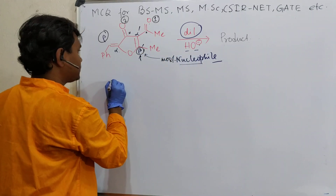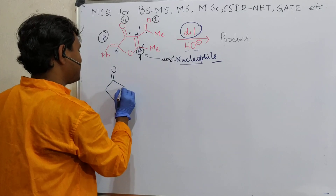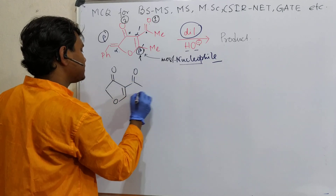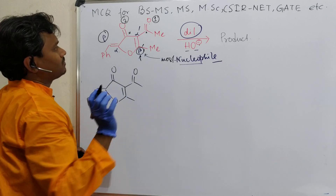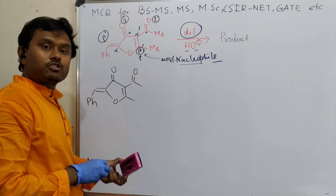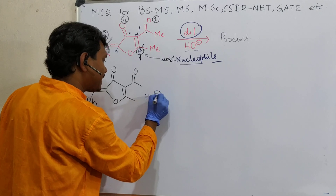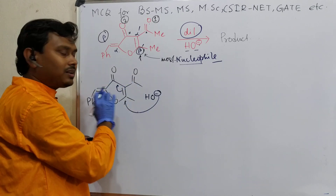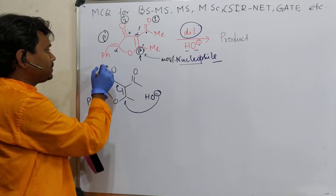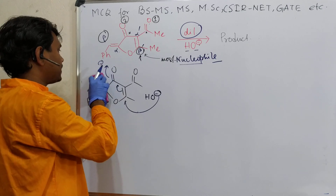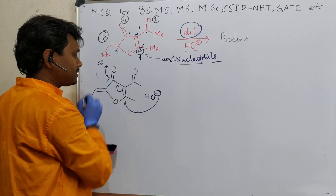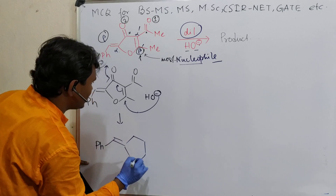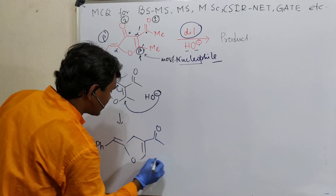Let me draw here again. I know sometimes it feels a little boring, but for clear understanding we should follow this strategy. This is our intermediate product. This is the most electron deficient carbon, so the attack will happen here. The hydroxyl will attack at this position, it will open up. Negative charge will come here. After that it will come back and the negative charge will remain here. This negative charge is resonance stabilized because it is alpha to both carbonyl carbons.